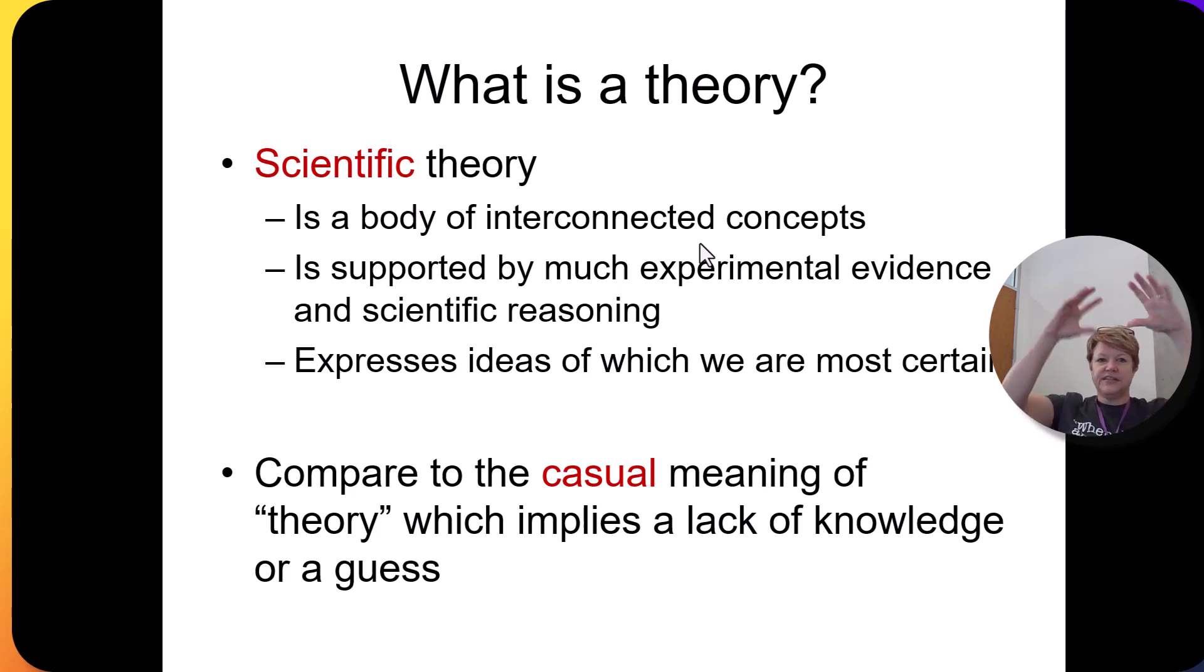So scientific theory is the thing that we're, like, as certain as we can be that it's correct. And the casual meaning of theory is just a guess. So, unfortunately, you have to discern in casual conversation, usually people are using the casual meaning of the word theory. But in this class, when we talk about cell theory or evolutionary theory, we're using the scientific version of the word theory. We're referring to a scientific theory, something that is very well supported. So be sure you're clear on the two definitions of that word theory.